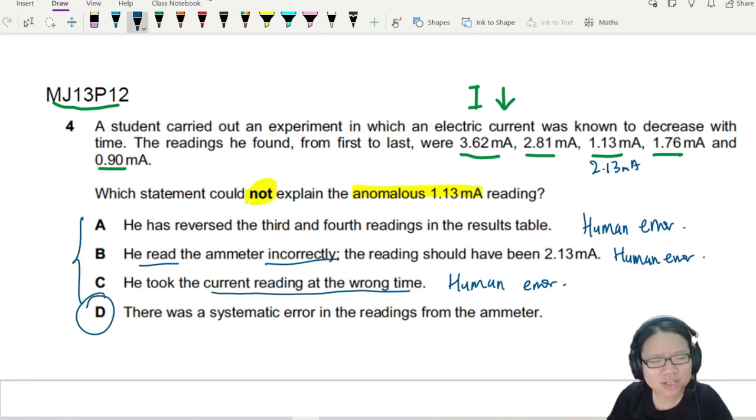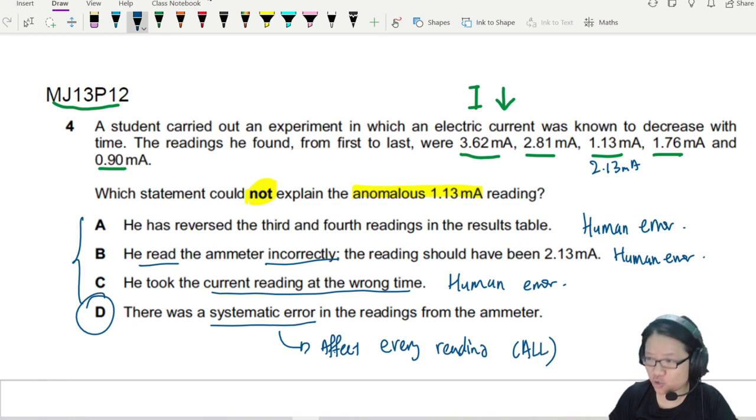So my elimination is D, but let's look at D. There was a systematic error in the readings from the ammeter. Systematic error will affect every reading, not just one, but all the readings.